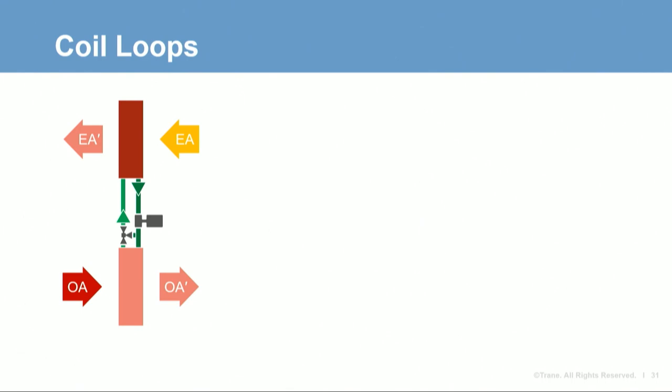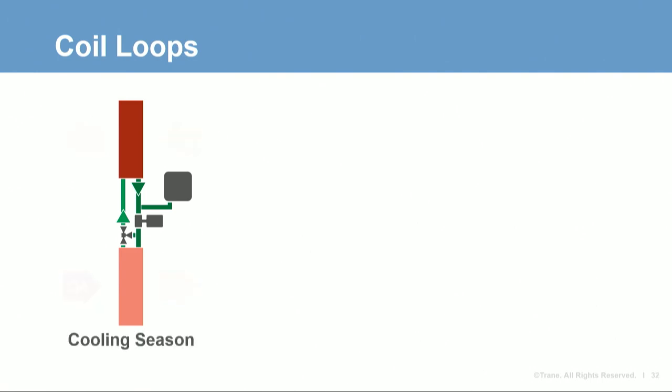A fluid is circulated by a pump between the coils to transfer sensible heat from one airstream to another. The fluid is often water mixed with a freeze inhibitor like glycol, and an expansion tank is needed because the fluid volume will change with temperature. In the cooling season, hot outdoor air enters the building for ventilation, passes through a coil, and the outdoor air is cooled. This warm fluid is circulated to the other coil in the exhaust airstream, where the heat is absorbed by the exhaust air as it leaves the building.